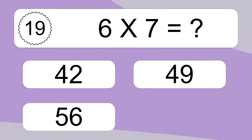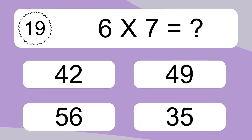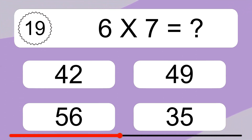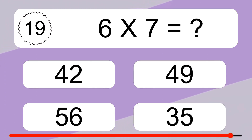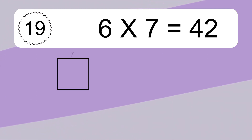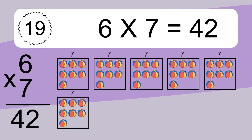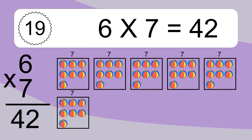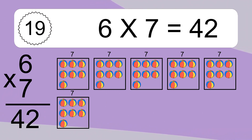6 times 7 equals what? 6 times 7 equals 42. We have 6 boxes, and each box has 7 colorful balls inside. If you count all the balls in all the boxes together, you will have 6 times 7 balls. This equals 42 balls.